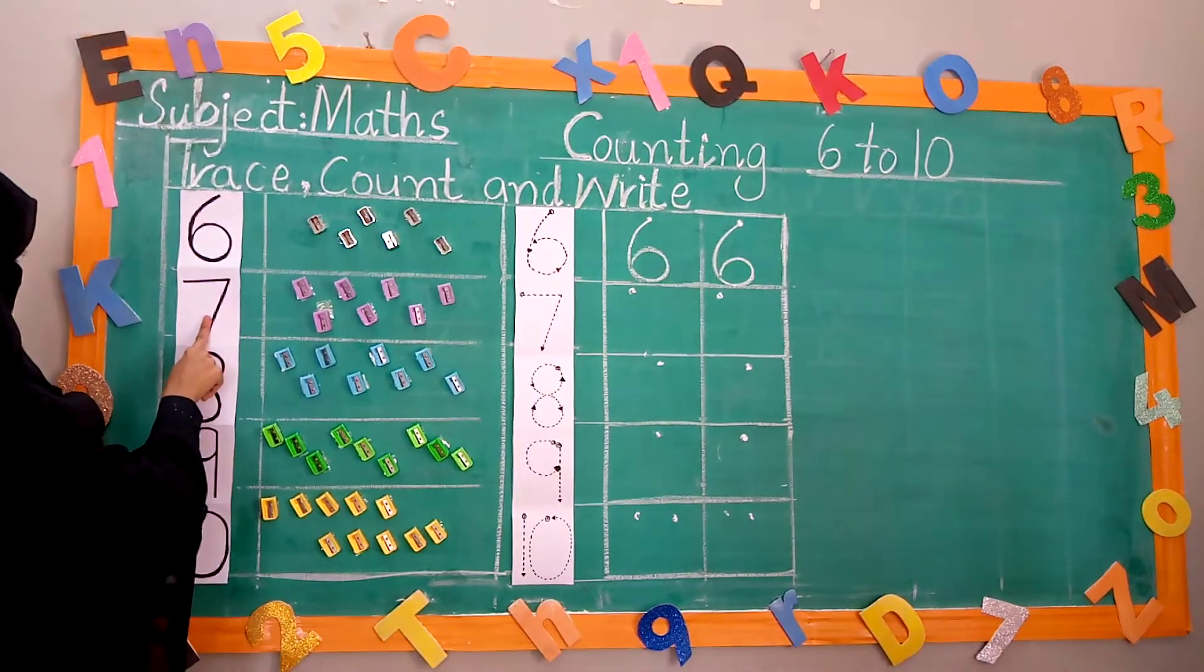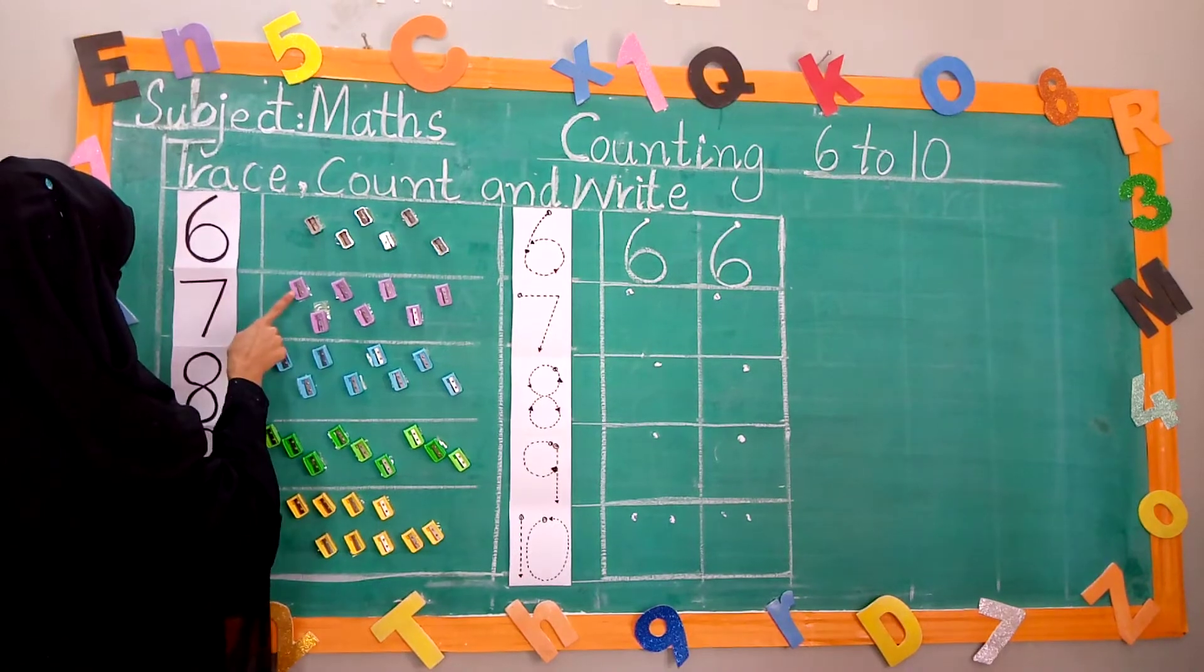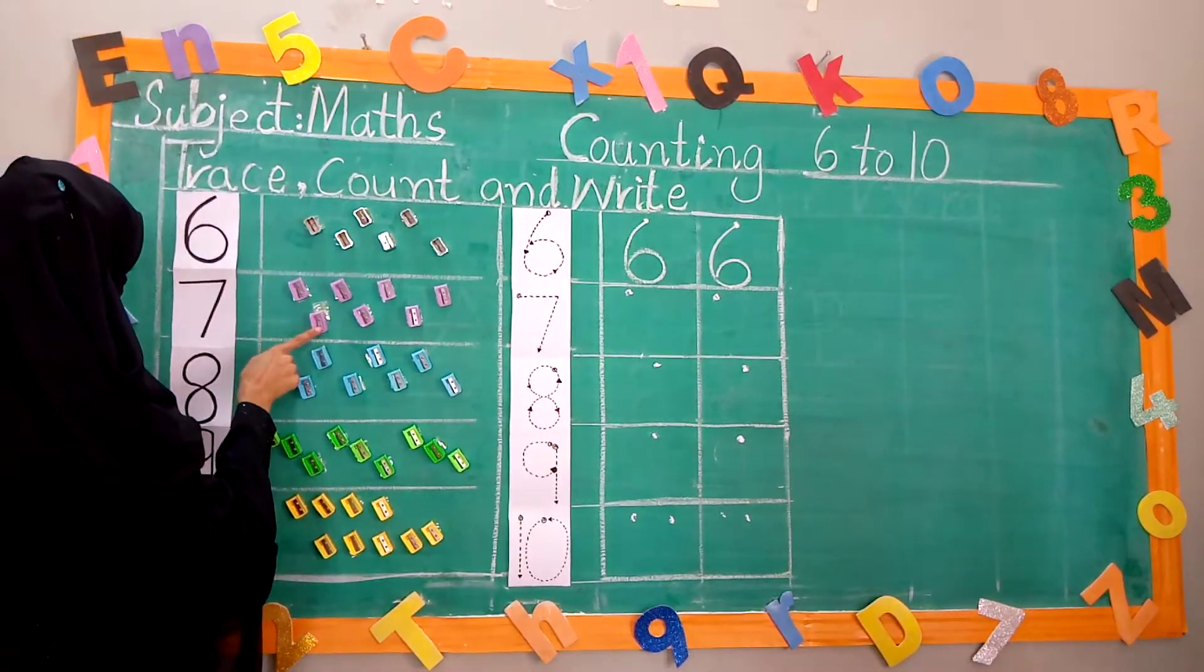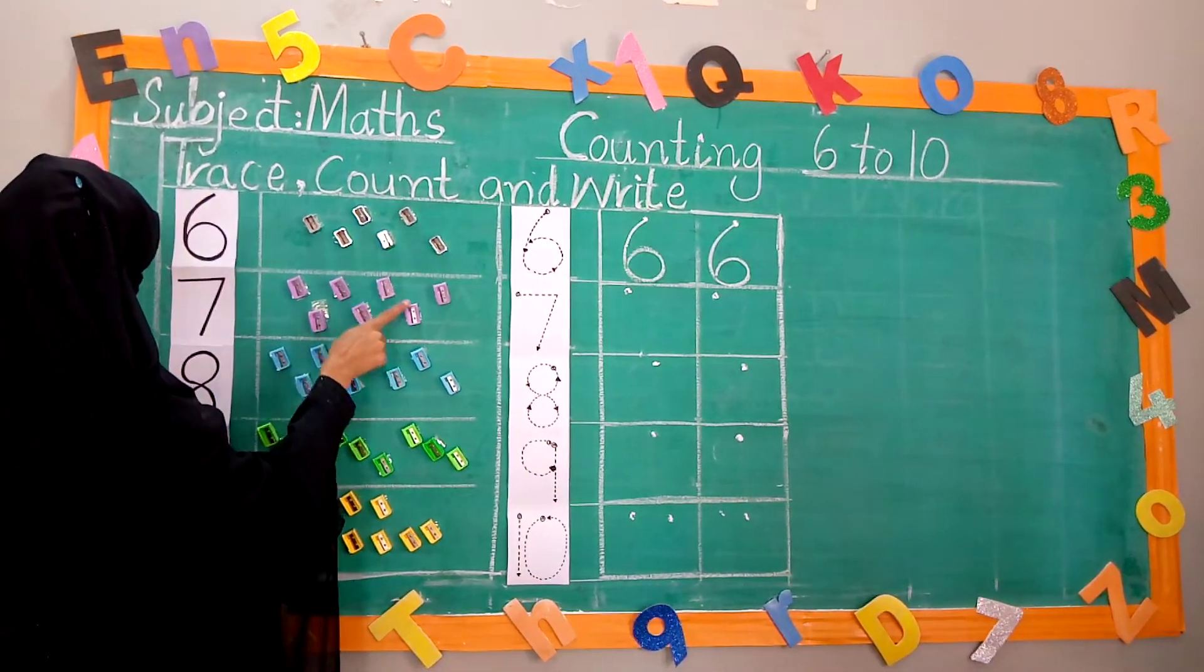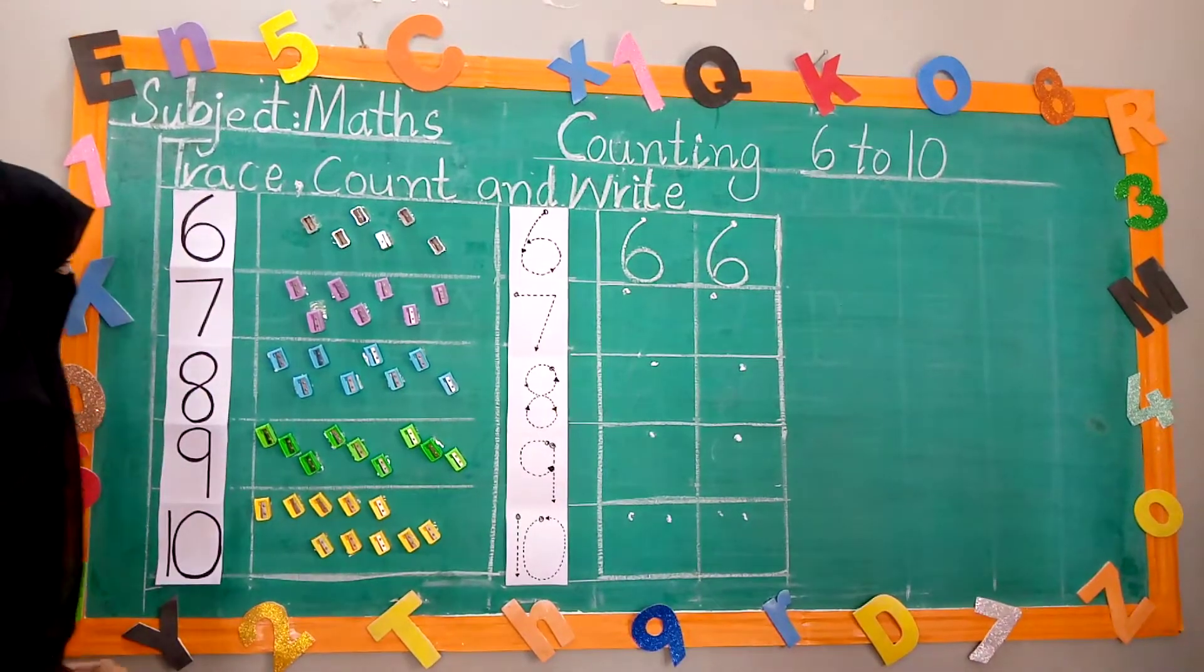Now, 7. How many sharpeners do I have? Count with me. 1, 2, 3, 4, 5, 6, 7. Seven sharpeners.